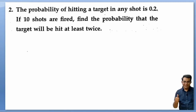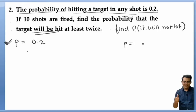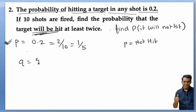Second question: the probability of hitting a target in a shot is 0.2, so P (success = hitting) = 0.2 = 1/5. Then Q (not hitting) = 4/5. If they ask for probability of not hitting, then P would be not-hitting. In this question, they say hitting probability is 0.2 = 1/5, and not hitting is 4/5.